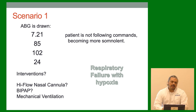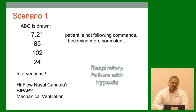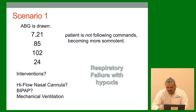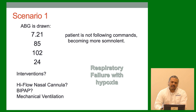Patient is not following commands, becoming more somnolent. Interventions considered: high-flow nasal cannula, BiPAP, or mechanical ventilation. We could think about BiPAP since he's not too far gone, however this patient is also not following commands and getting more somnolent. He has hypoxia and is failing respiratory-wise — kind of everything going wrong. So mechanical ventilation may be the key for him.